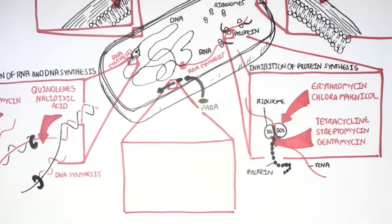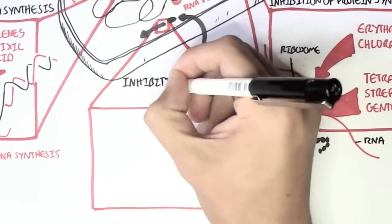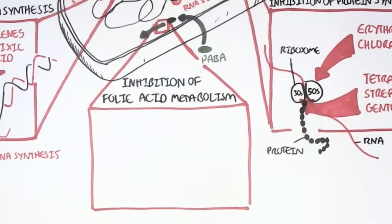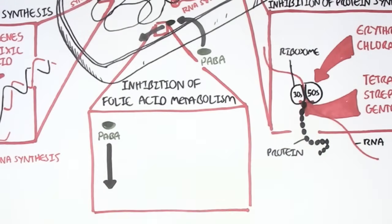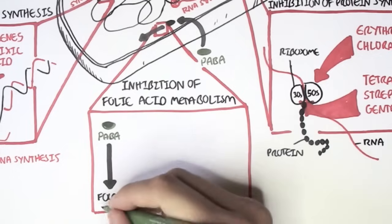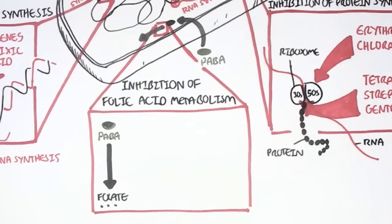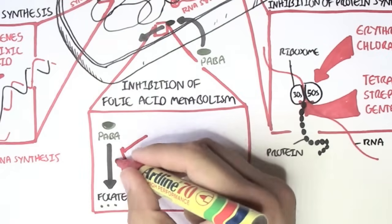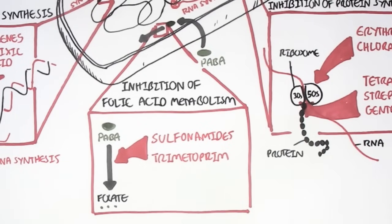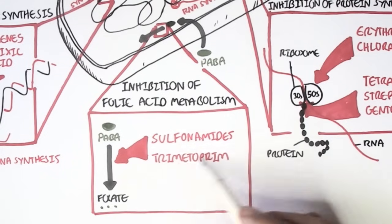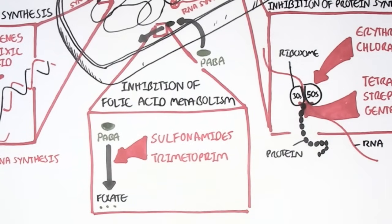There are antibiotics out there that inhibit folic acid metabolism. PABA normally can be metabolized to folic acid within the bacteria. Folic acid, or folate, is essential for the synthesis of adenine and thymine, two of the four nucleic acids that make up DNA. These antibiotics, such as sulfonamides and trimethoprim, prevent conversion of PABA to folate and therefore prevent proper DNA synthesis.